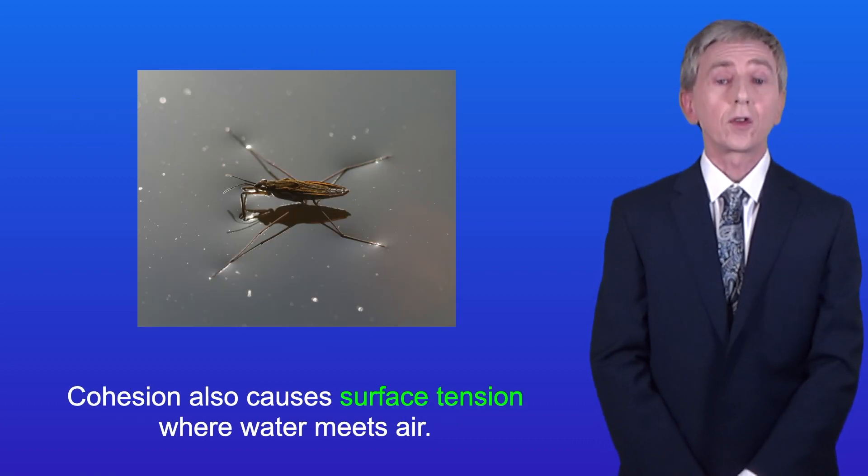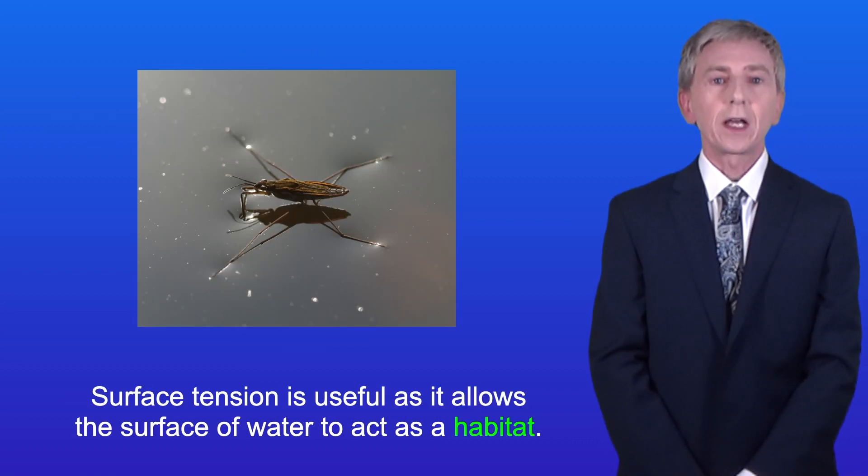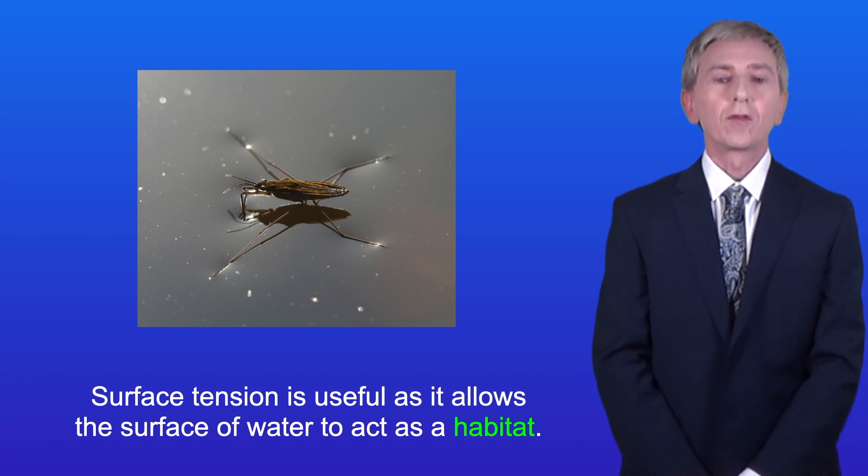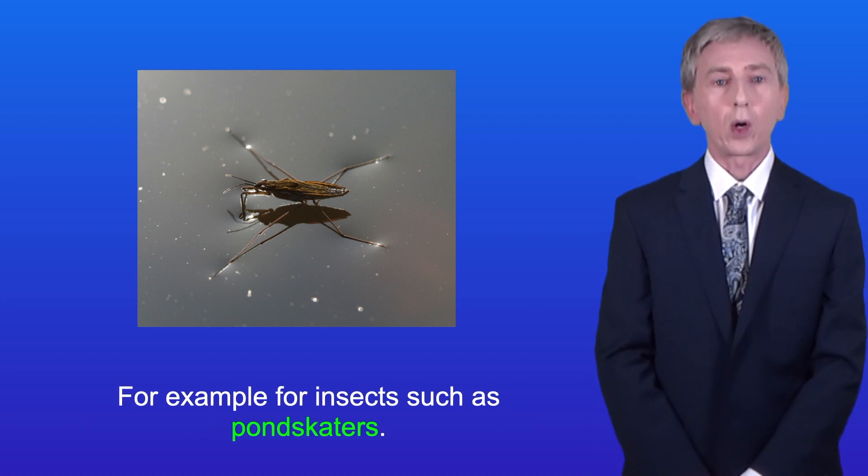Cohesion also causes surface tension where water meets air. Surface tension is useful as it allows the surface of water to act as a habitat for example for insects such as pond skaters.